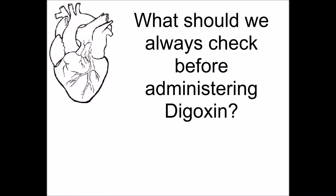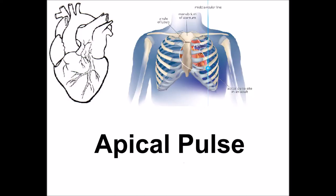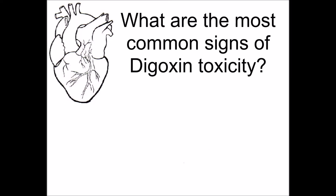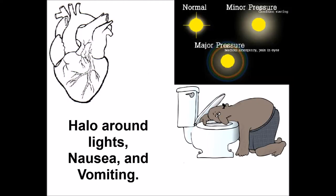What should we always check before administering digoxin? Apical pulse. What are the most common signs of digoxin toxicity? Halo around lights, nausea, and vomiting.